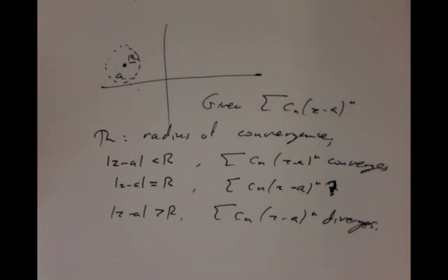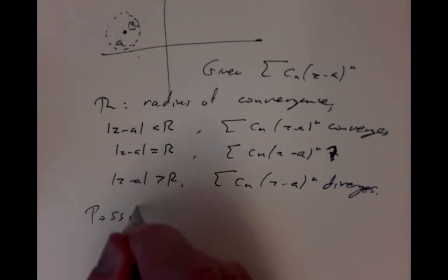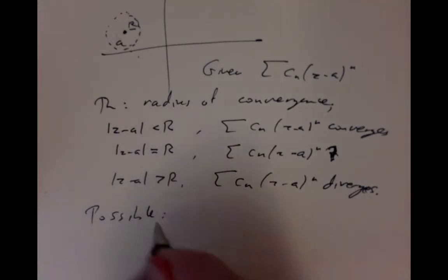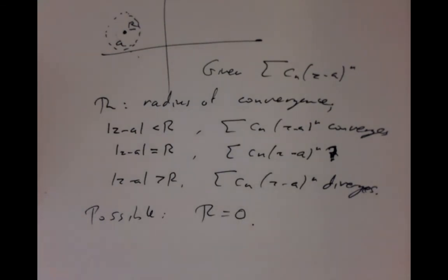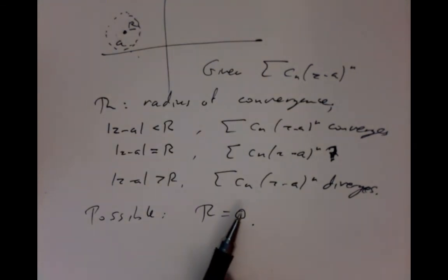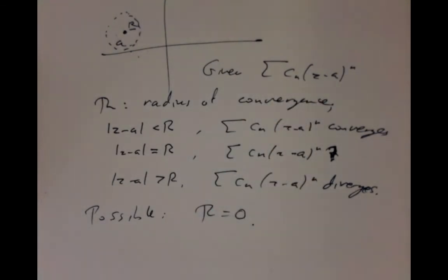It's possible that this disk could be very small. In fact, it's possible to have the radius of convergence equal to zero, so that you get divergence everywhere except perhaps at the point z equals a itself. So it's possible that the series doesn't converge away from z equals a at all.